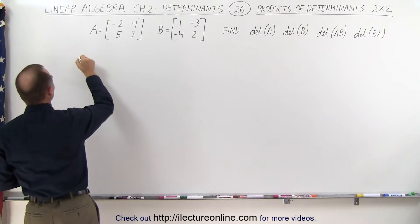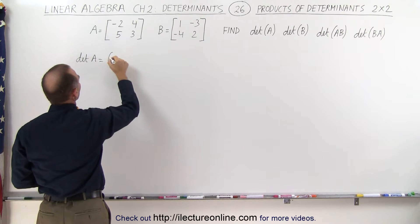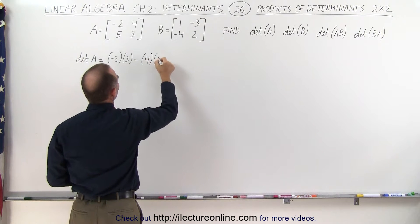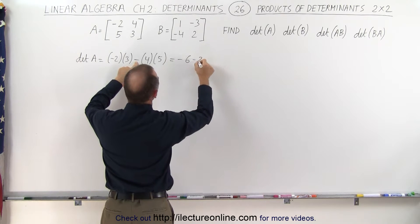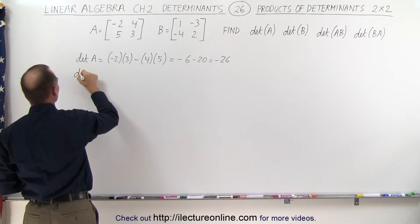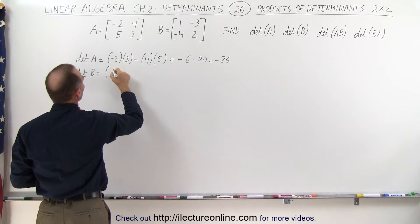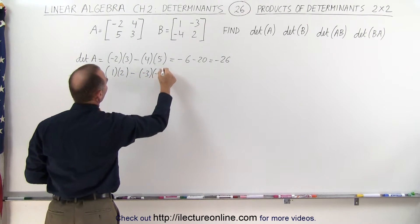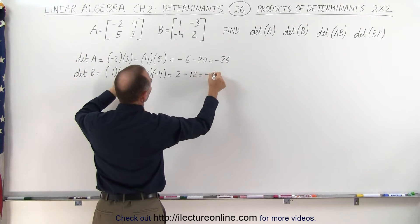The determinant of A is equal to the product of the diagonal, that's minus 2 times 3, minus the product of the other diagonal, which is 4 times 5. That gives us minus 6 minus 20, which is minus 26. Now the determinant of B: we get 1 times 2, minus minus 3 times minus 4, which gives us 2 minus 12, which is minus 10.